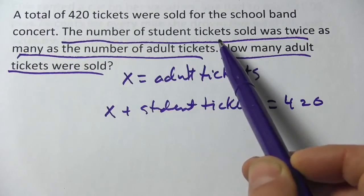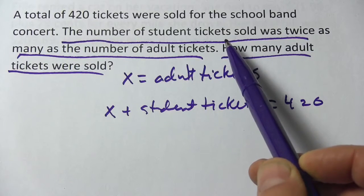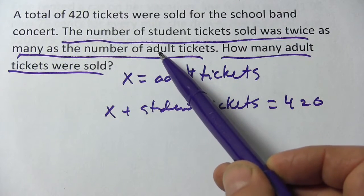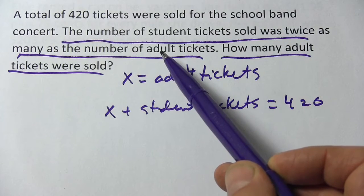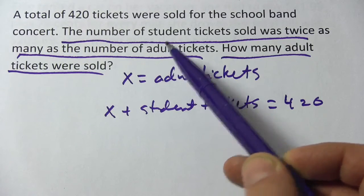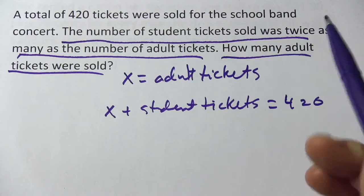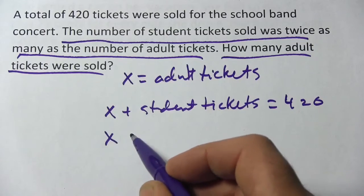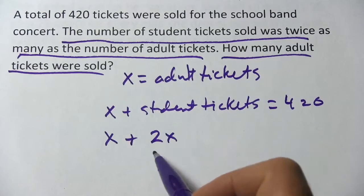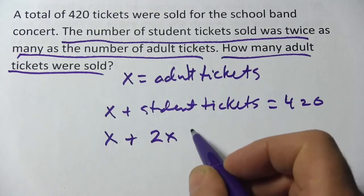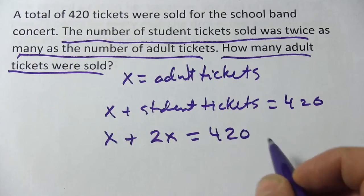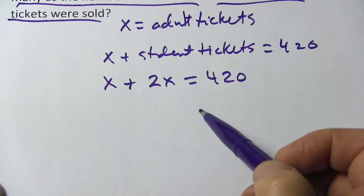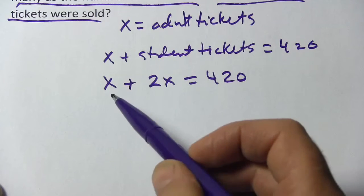It says the number of student tickets sold was twice as many as the number of adult tickets. The adult tickets is x, so twice as many as that is 2 times x. So x adult tickets plus 2 times x student tickets equals 420. Now we have an equation with one variable — just an x — and some numbers.